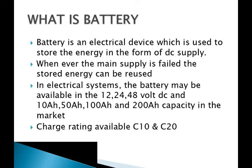First of all, what is a battery? A battery is an electrical device which is used to store energy in the form of DC supply. Whenever the main supply is failed, the stored energy can be used. Normally, electrical batteries are available in the market in the range of 12V, 24V, and 48V.